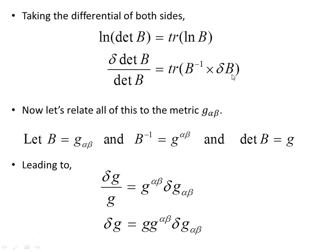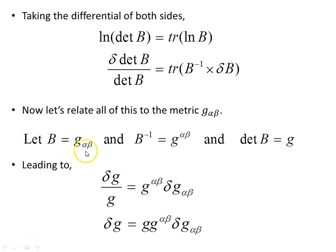The aim of this video is to look at the variation of the metric, so this expression will help us do that. We relate this to the metric G alpha beta with subscript indices. Let B equal G alpha beta; B inverse will be the inverse metric G alpha beta contravariant with upper indices; and the determinant of B will just be G. So delta B over B becomes delta G over G, and the inverse times the variation in B gives us: delta G equals G, the determinant, times the inverse metric G alpha beta contravariant, times delta G alpha beta — the variation in the metric.